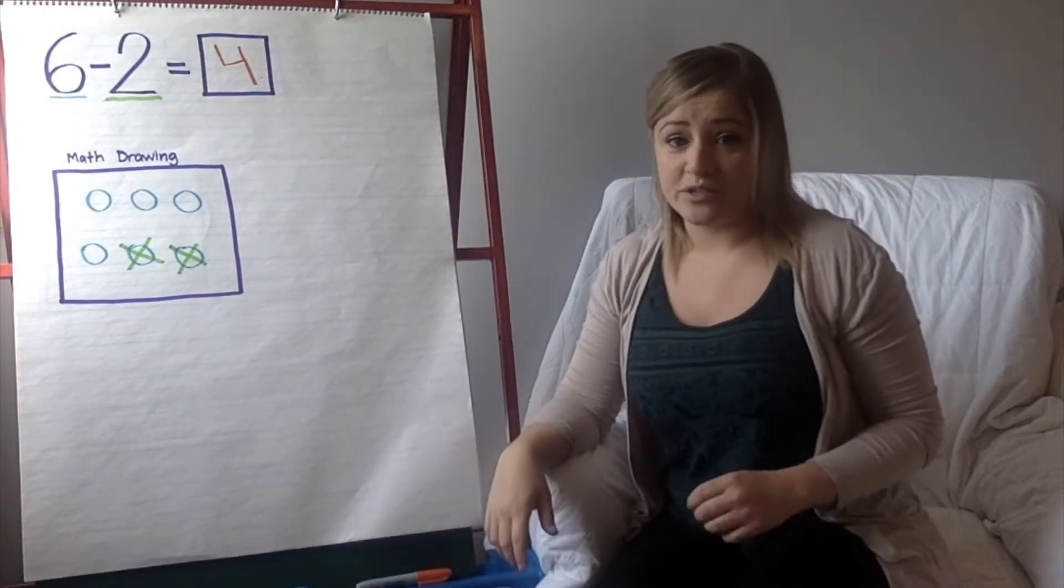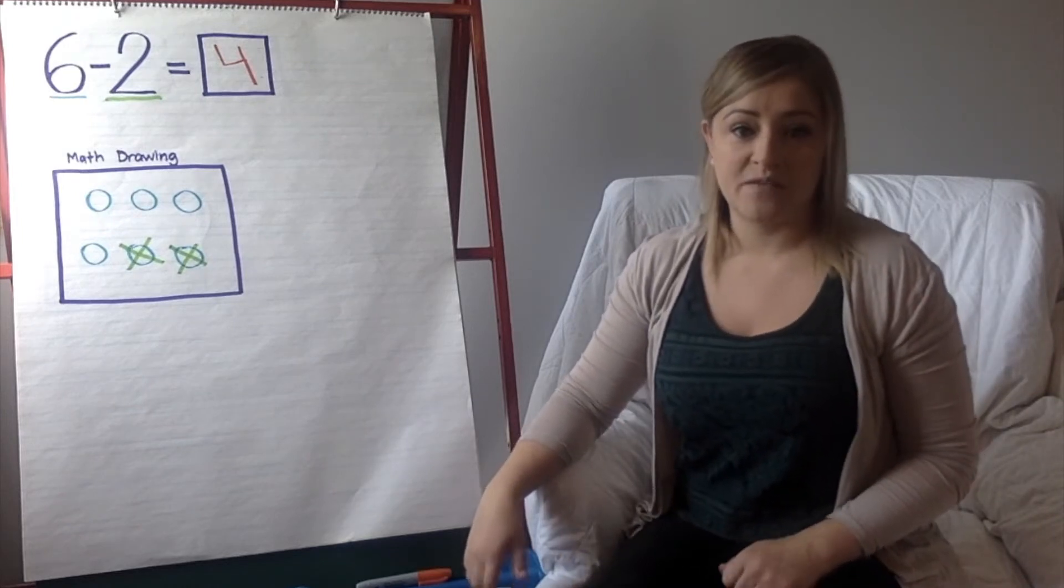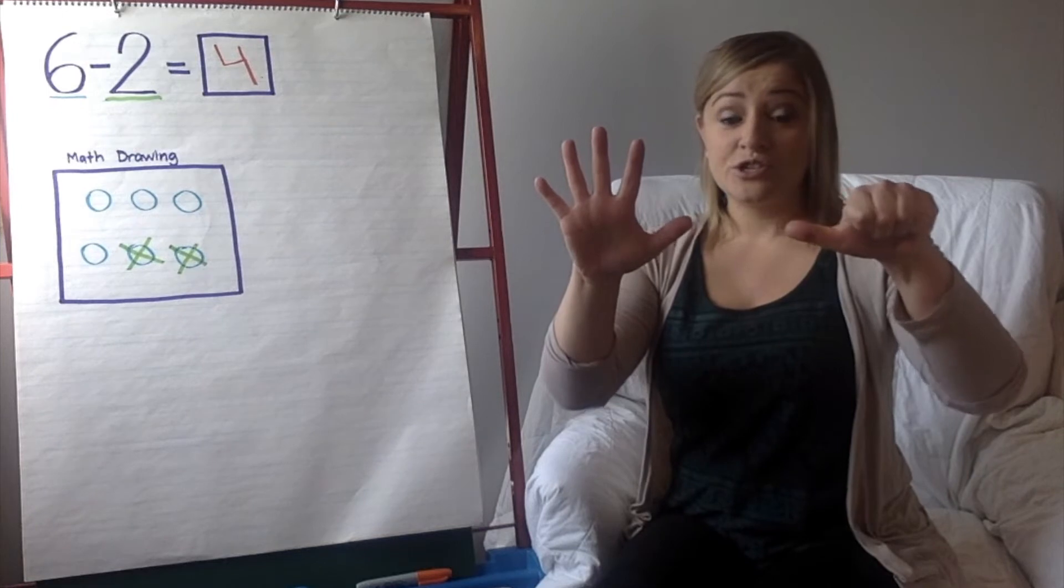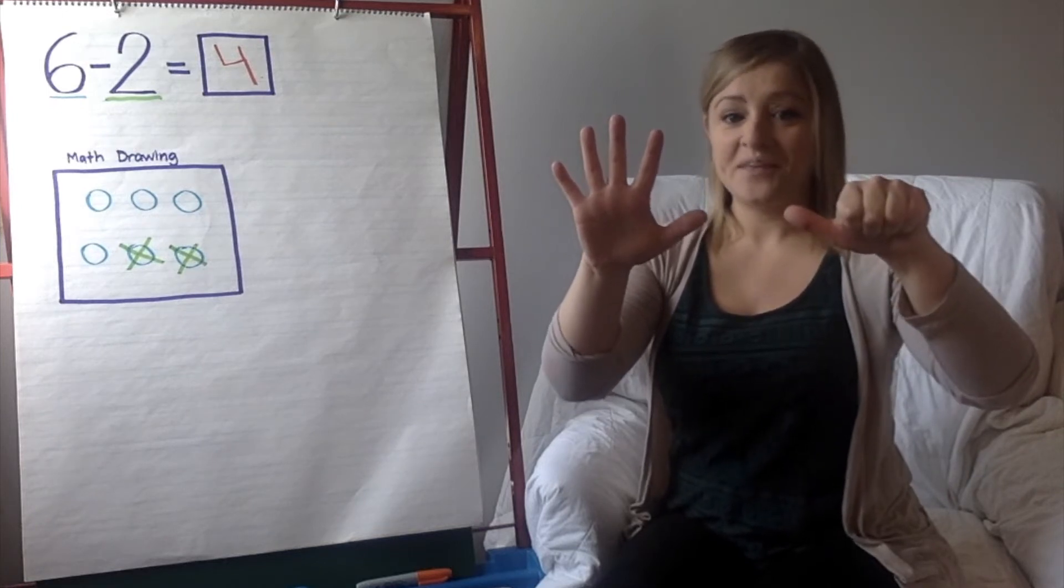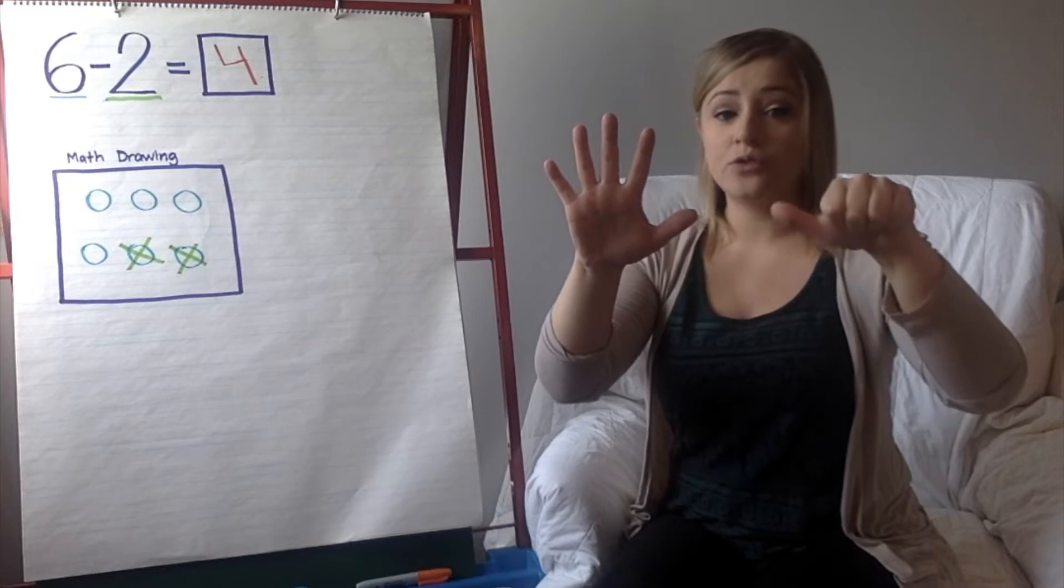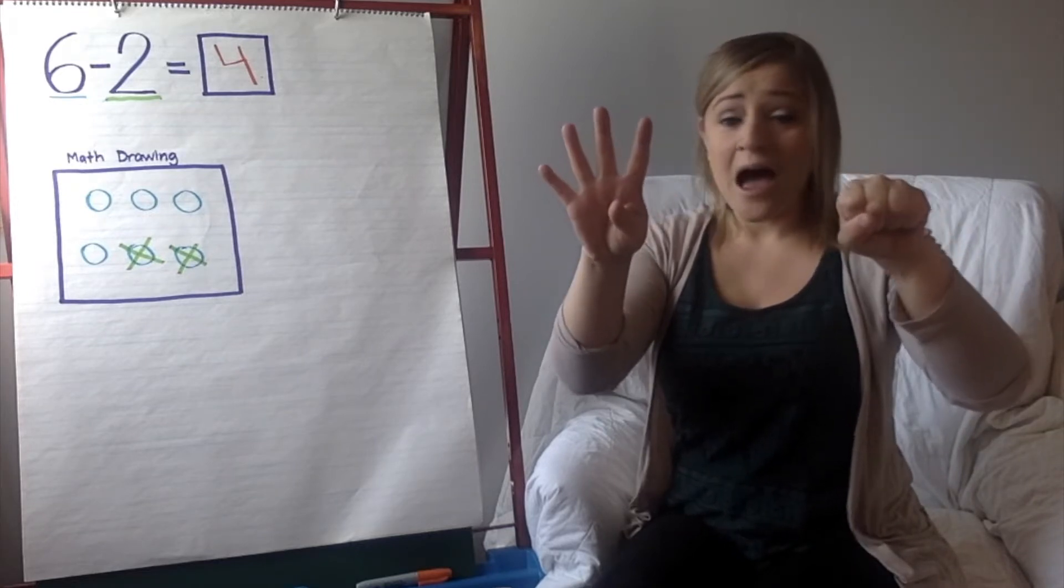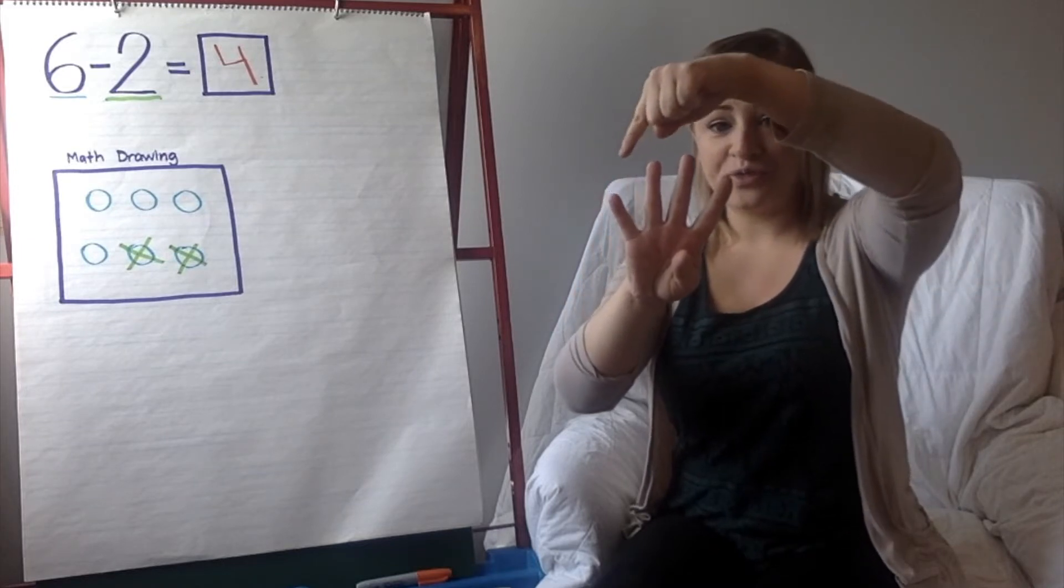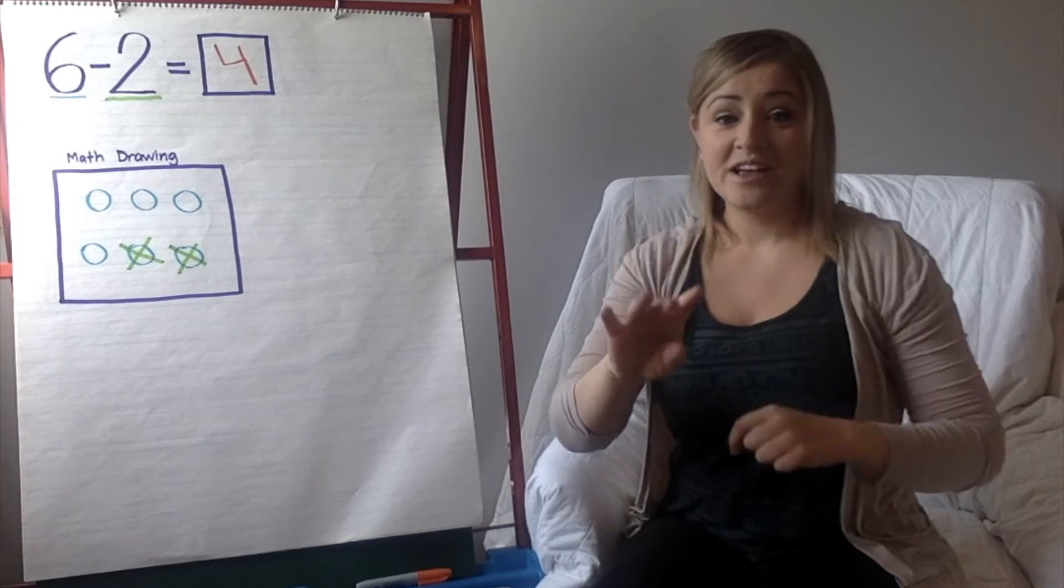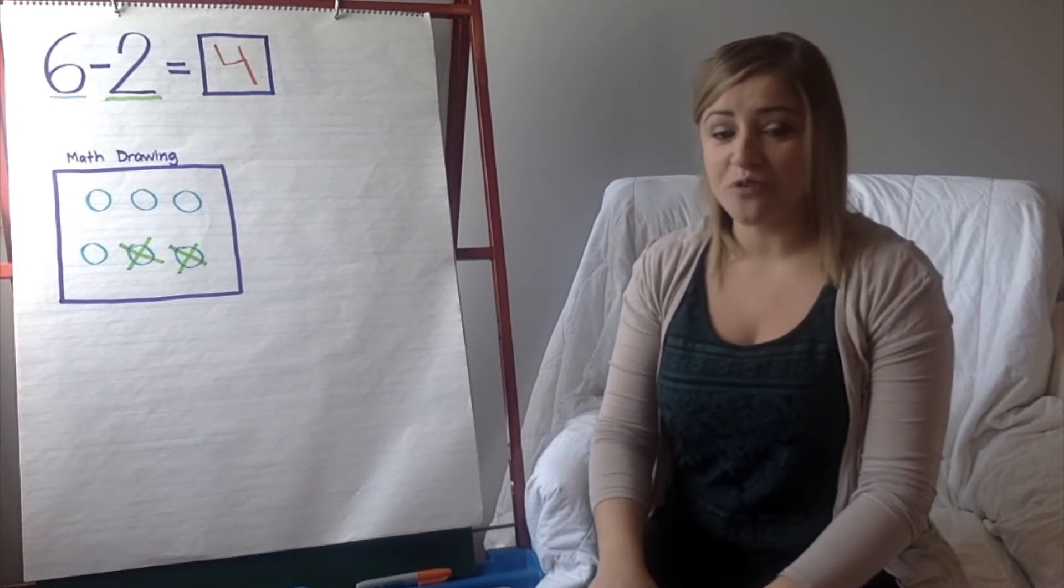Another way that you can solve this is by using your fingers. Everyone put up 6 fingers. Do you have your 6 fingers up in the air? Awesome. Now, I want you to take 2 of those fingers away. 1, 2. How many fingers do you have left? 1, 2, 3, 4. So, that's how we can solve our problem of 6 take away 2 equals 4 using our hands.